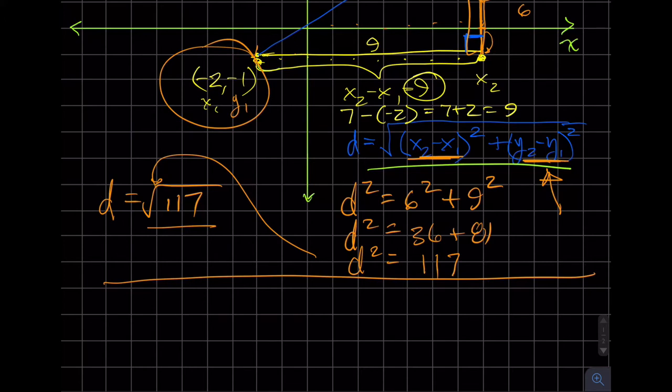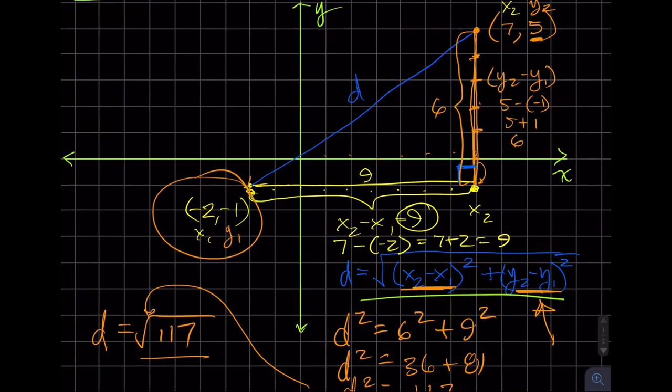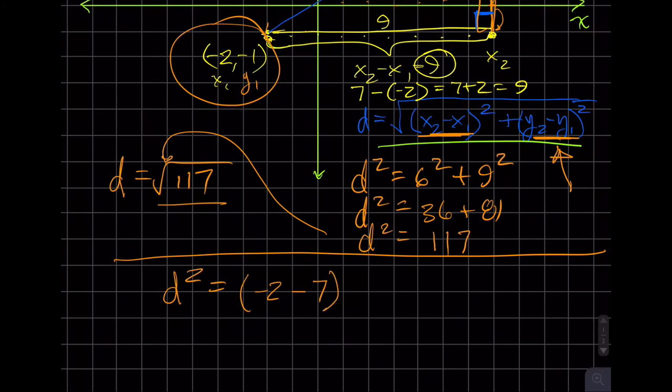So then if I set this up again, d² equals, and let's put (-2) minus 7, right? (-2) minus 7, we're going to square that, plus (-1) minus 5, that's my vertical.